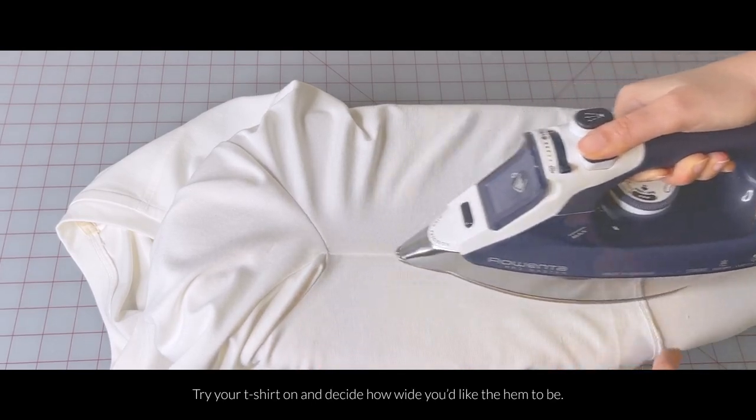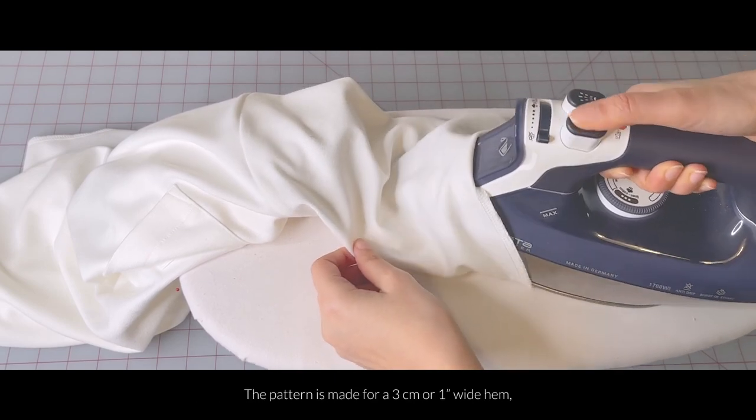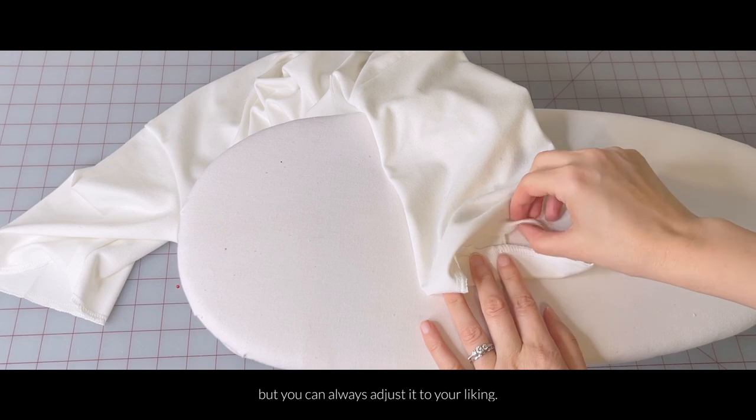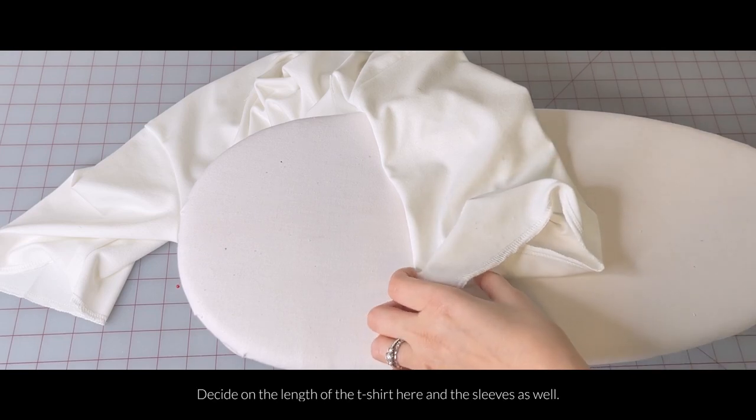Try on your t-shirt and decide how wide you would like your hem to be. The pattern is made for a 3cm or 1 inch wide hem, but you can always adjust it to your liking. Decide on the length of the sleeves here as well.